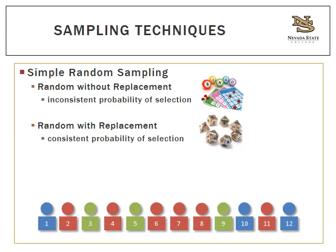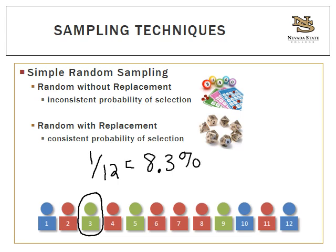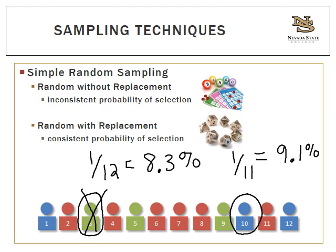Let's use an example with a population of 12 people. With random sampling without replacement: my first selection, say green 3, had a 1-in-12 or 8.3% chance of being selected. That person is gone — not replaced — so the next selection, say blue 10, has a 1-in-11 or 9.1% probability. If I make another selection, now I'm drawing from 10, and if I get red 7, the probability was 1 in 10 or 10%. So with random selection without replacement, the probability changes for each selection.